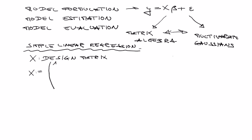You should remember that the design matrix for simple linear regression comprises a column of ones and the values of the independent variables — x_1 through x_n. The design matrix in this case has n rows and two columns. That was the design matrix for simple linear regression, which we discussed previously.